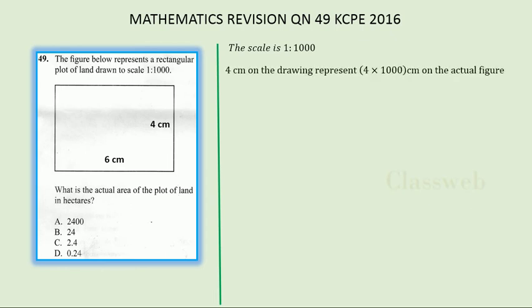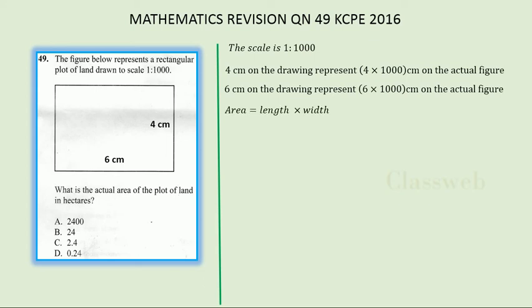Multiplying four by one thousand gives four thousand centimeters for the width. The same is done for the length: six multiplied by one thousand gives six thousand centimeters. The area of a rectangle is length times width, so you would multiply six thousand by four thousand.